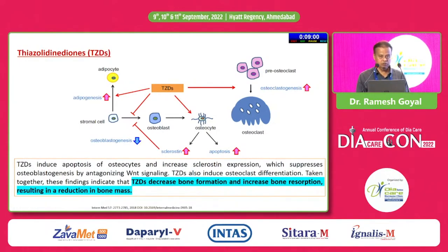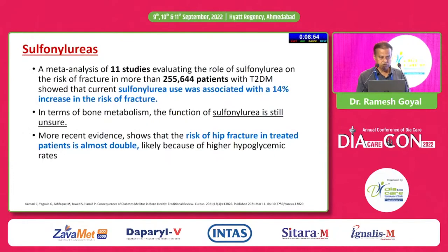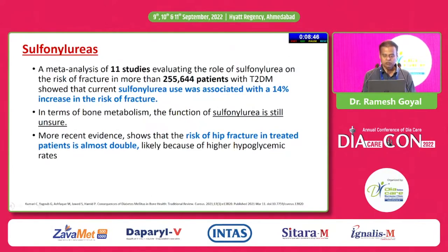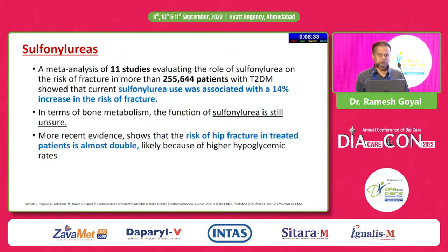For sulfonylureas, a meta-analysis of 11 studies evaluating around 250,000 patients with type 2 diabetes treated with sulfonylurea showed a 14% increase in risk of fracture. In terms of bone metabolism, sulfonylurea function is mostly neutral — it doesn't significantly affect osteoblasts or osteoclasts. However, more recent evidence shows that the risk of hip fracture in treated patients is almost double, likely because of higher hypoglycemic rates with sulfonylurea leading to more falls.